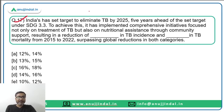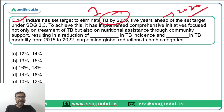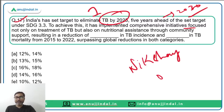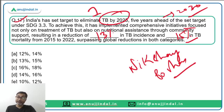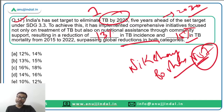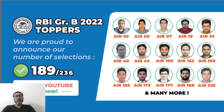The last question: India has set a target to eliminate TB by 2025, five years ahead of the SDG 3.3 target of 2030. To achieve this, comprehensive initiatives have been implemented including nutritional assistance like Nikshay Poshan Yojana and community support, resulting in a reduction of 13% in TB incidence and 15% in TB mortality from 2015 to 2020, surpassing the global reduction in both categories. The correct answer is option B — 13 and 15.